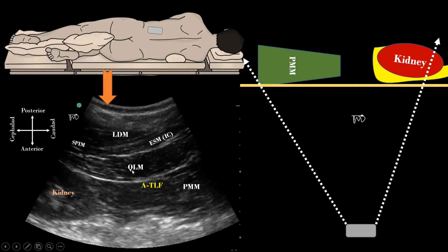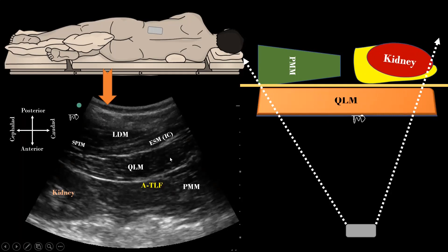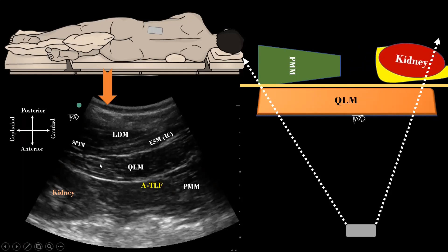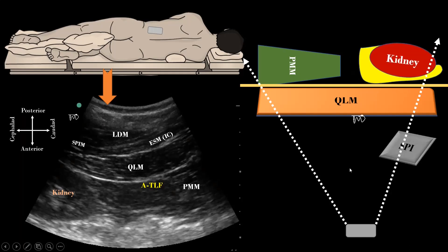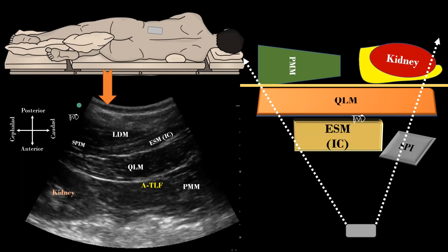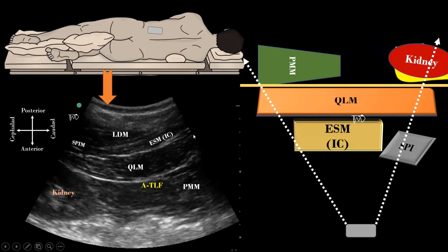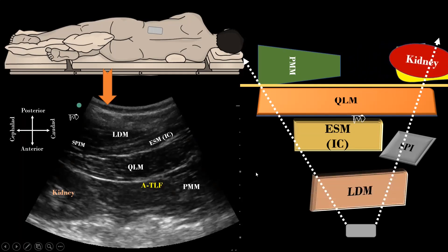The hypoechoic muscle just behind the anterior layer of the thoracolumbar fascia is the QL muscle. It tapers and thins cranially before its insertion into the lower border of the 12th rib. Posterior to the QL, a bit of serratus posterior inferior muscle and a thin layer of iliocostalis muscle from the erector spinae group or paraspinal muscles are visible. The third layer is formed by the latissimus dorsi muscle, which is the most superficial one.